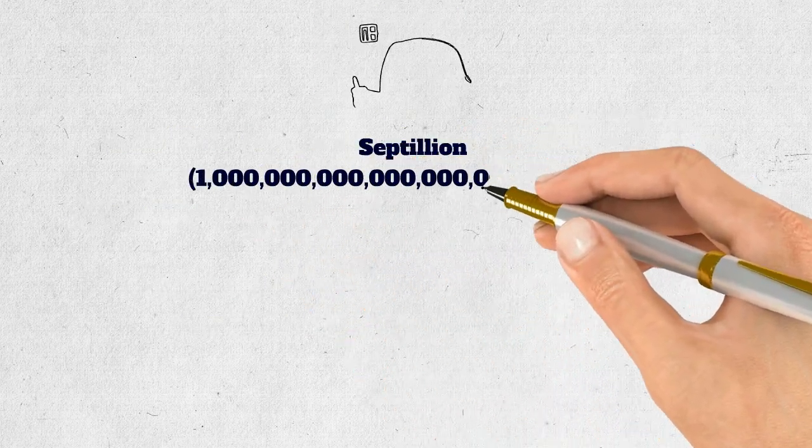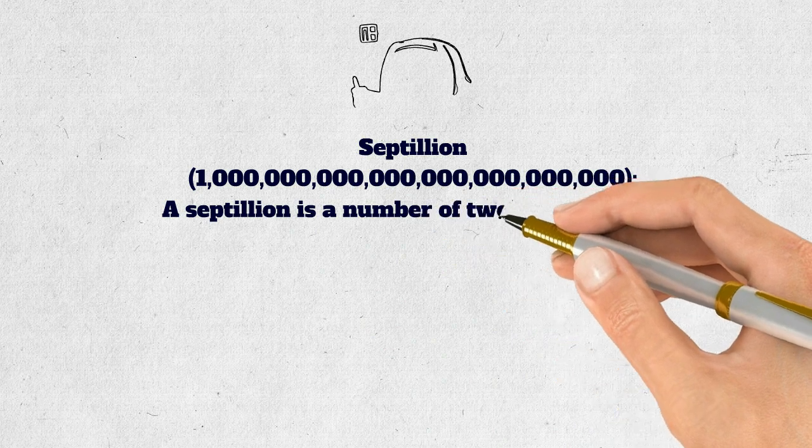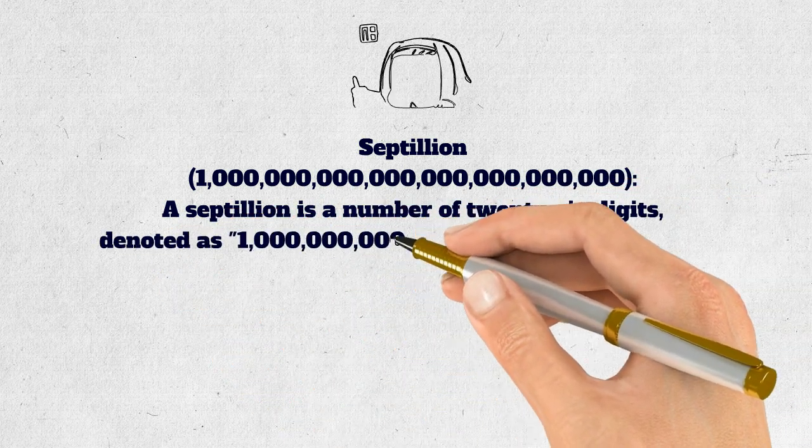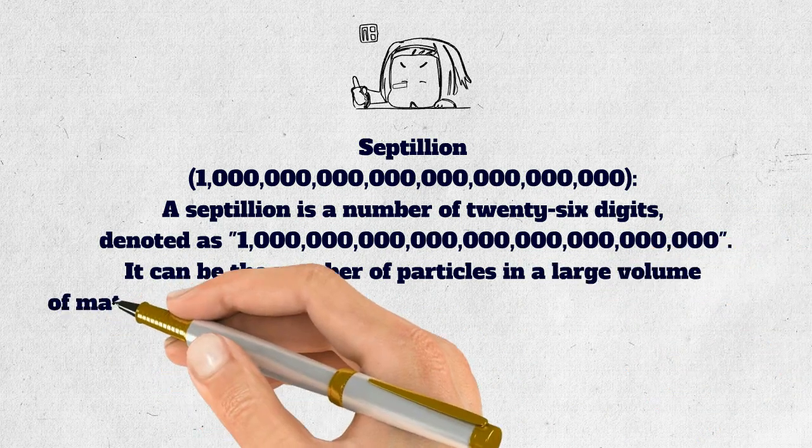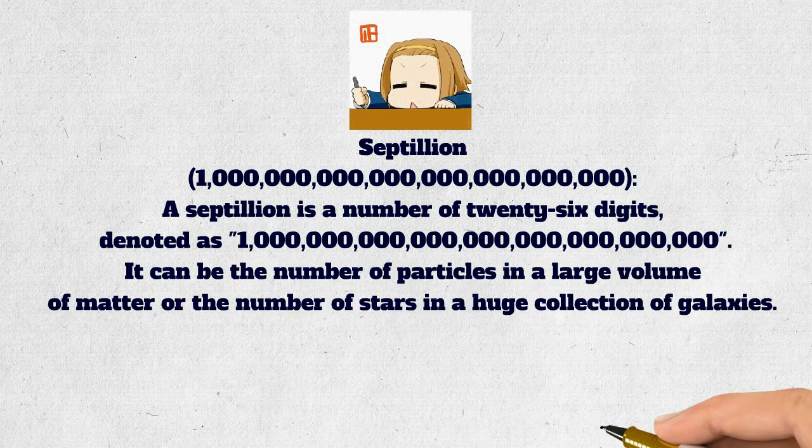Septillion. A septillion is a number of 26 digits, denoted as 1,000,000,000,000,000,000,000,000,000. It can be the number of particles in a large volume of matter or the number of stars in a huge collection of galaxies.